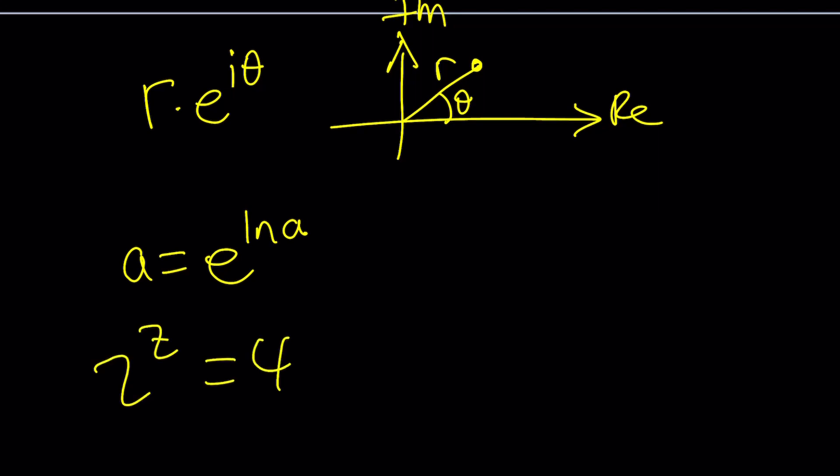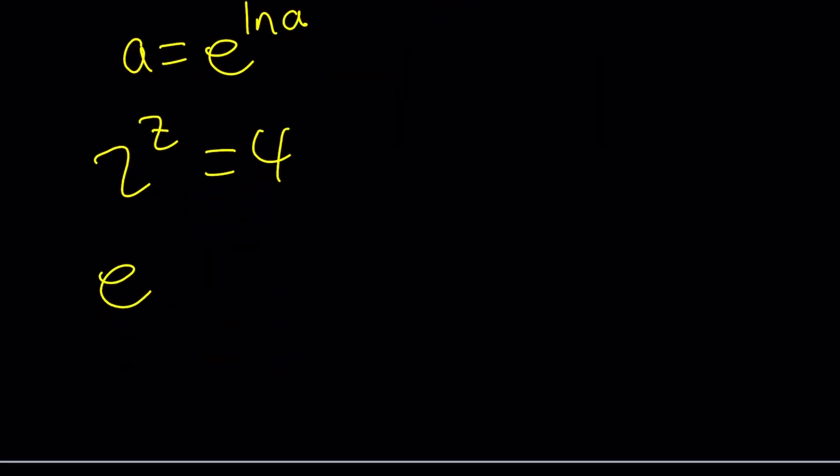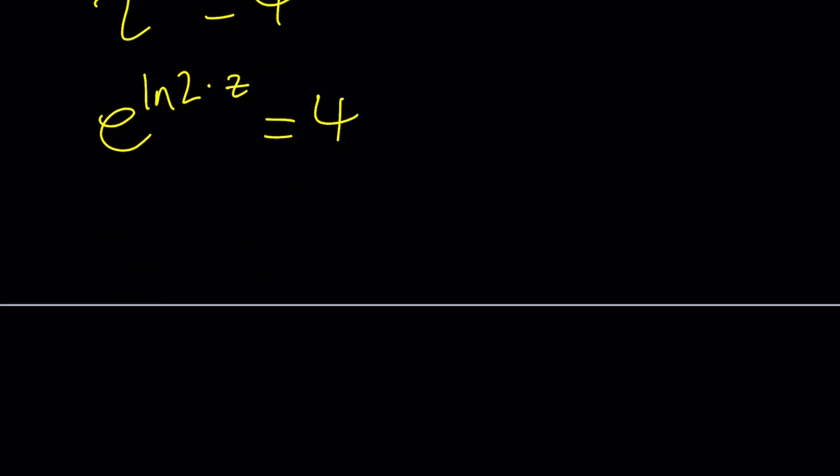2 to the z equals 4. I'm going to write the 2 as E to the power ln 2. And that will be multiplied by z. And that's going to equal 4. We can also write this as E to the power z ln 2, which is a little better.